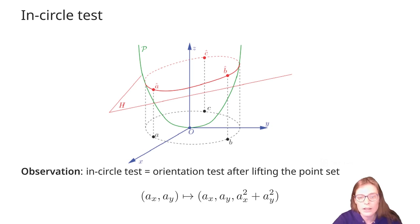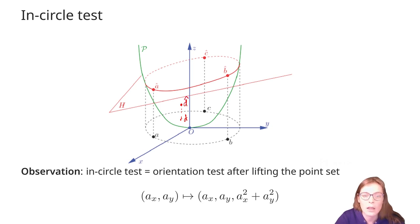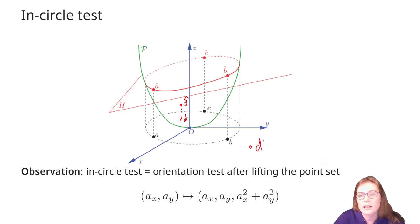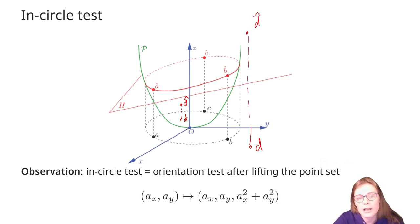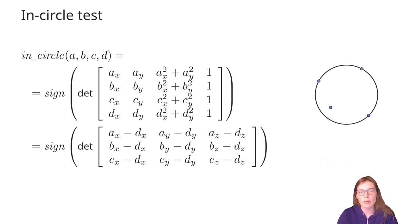For example, the in-circle test can be reduced to the orientation test in three dimensions. For given three points A, B, and C, we construct three lifted points A-hat, B-hat, and C-hat, where the first two coordinates are equal to the original point's coordinates and the third coordinate is the sum of the squares of the first two. This operation lifts the points onto a paraboloid. Then a fourth point D lies inside the circle through A, B, C if its lifted version D-hat lies below the plane H through A-hat, B-hat, and C-hat. Similarly, the in-circle test can be written as the sign of the determinant of a 4x4 matrix.